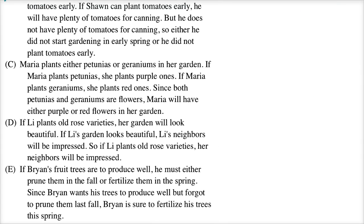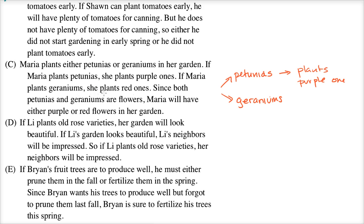Choice C: Maria plants either petunias or geraniums in her garden. If she plants petunias, she plants purple ones. If she plants geraniums, she plants red ones. Since both petunias and geraniums are flowers, Maria will have either purple or red flowers in her garden. This is a completely different logical structure — they set up an either/or option, and if she does either one, here's what happens. We're not asking if it's valid; we're asking if it's a similar logical structure. It's clearly different, so C is out.